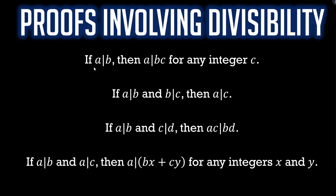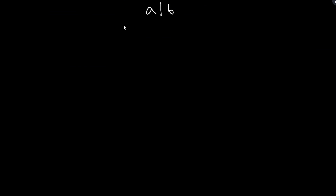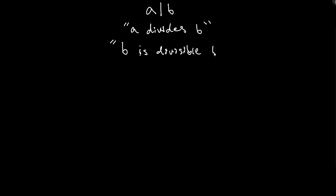What does the notation 'a vertical bar b' mean? We read this out loud as 'a divides b,' and it's really important we know what this means before we prove statements using it. If you already know what this means, feel free to skip ahead. A divides B — that's how we read it — and what is hopefully more familiar is 'B is divisible by A.' It turns out these two things are equivalent; they mean the same thing.